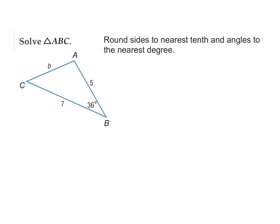Once I find side B, I will have the opposite side-angle combination, and I can go away from law of cosines and go back to law of sines. Go ahead and find side B rounded to the nearest tenth. This is your setup — side B is 4.2 units, and most of you look like you had that. Raise your hand if you had that.